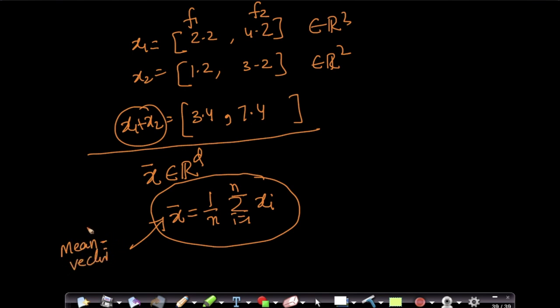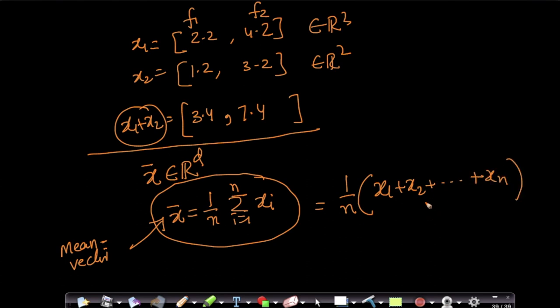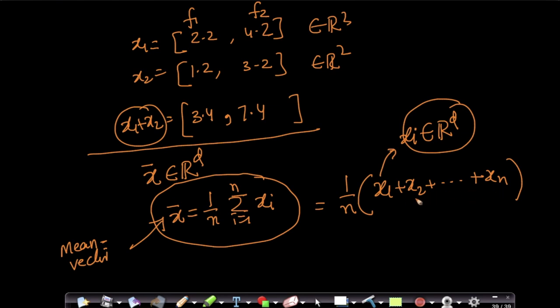The mean vector is nothing but (1/n)(x1 + x2 + ... + xn). Again, each xᵢ belongs to ℝᵈ — these are not scalars, these are vectors. So just like scalar mean, I can also define a mean vector. Now you might ask what this means geometrically — let's understand the geometric interpretation of a mean vector.